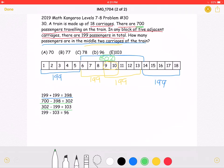What this means is that if we took 302 and subtracted the number of people in carriages 6 through 10, for example, we will be left with 103, which is equal to the number of people in the last 3 carriages.